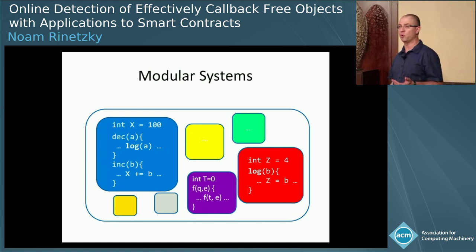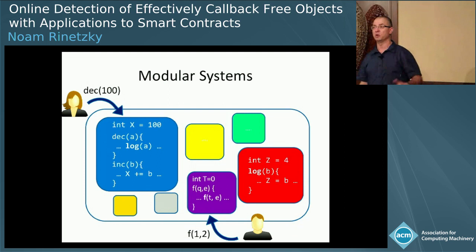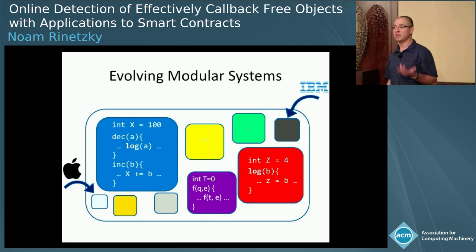The system is driven by users invoking methods from the outside world. Once a user invokes a method, the method runs until completion, and then another method can run. The system can also evolve by having new components added, and existing components can be modified to behave differently.